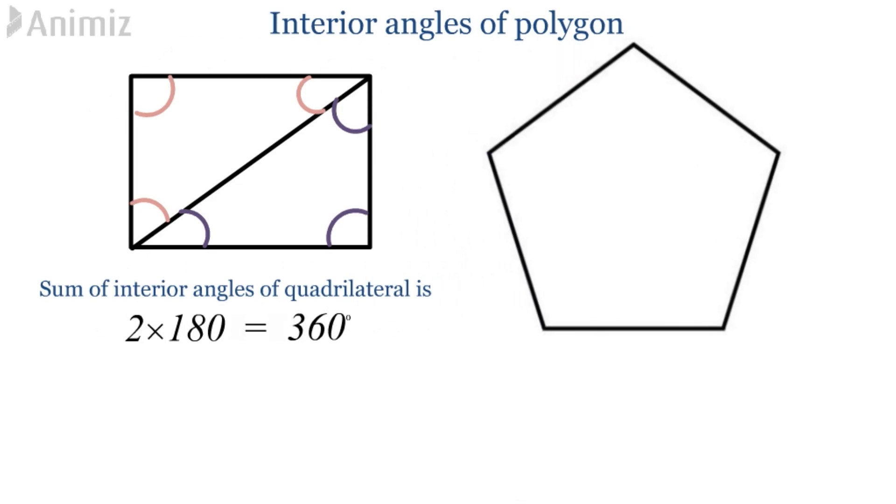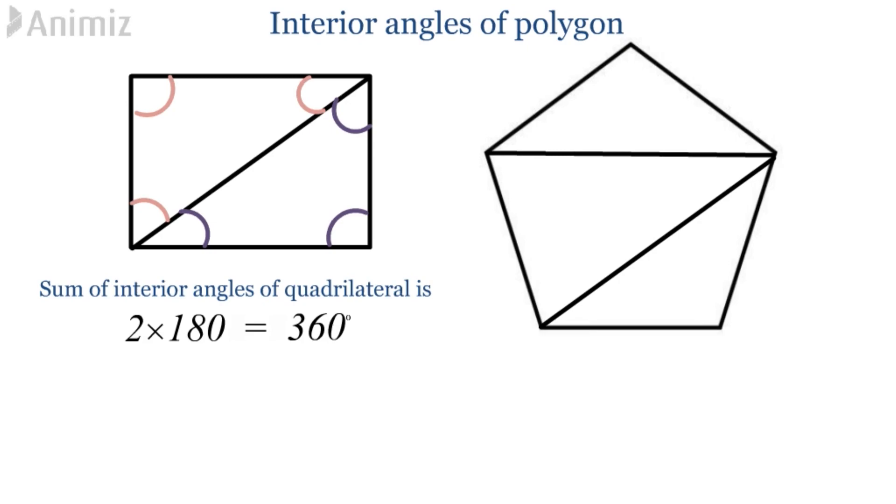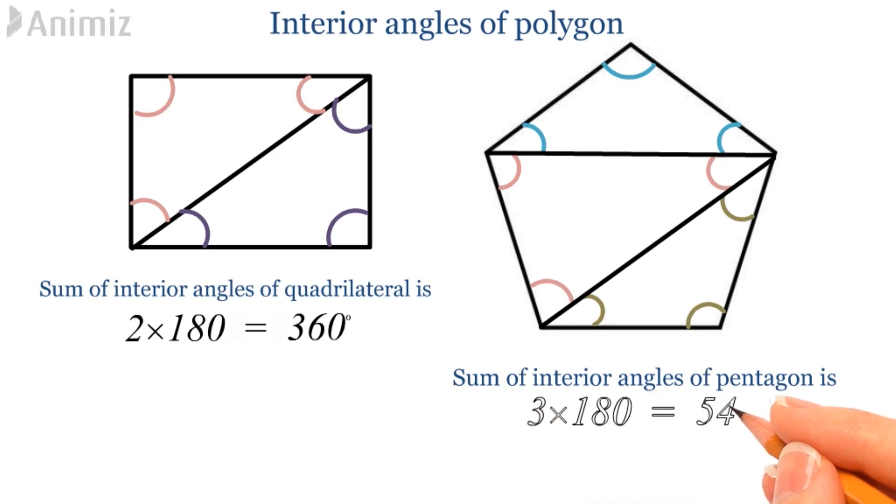Let's observe a pentagon. It can be divided into three triangles. For the first triangle, the sum of interior angles is 180. Similarly, for the second and third triangle, the sum of interior angles is 180. And hence, the sum of interior angles of this pentagon is 3 times 180, which is equal to 540 degree.